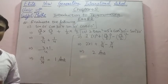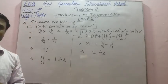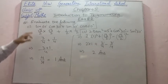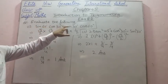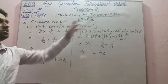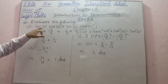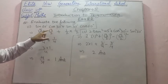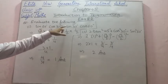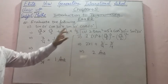In exercise 8.2, question number 1, we have to evaluate the following: sin 60° · cos 30° + sin 30° · cos 60°. We can put the values of these angles directly. So: sin 60° = √3/2, cos 30° = √3/2, sin 30° = 1/2, and cos 60° = 1/2.